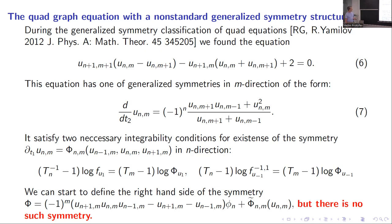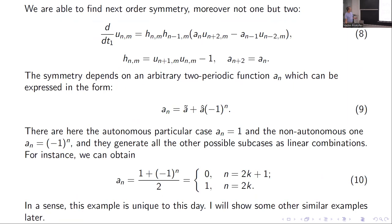So at first we were confused about how this happened — one symmetry exists but the second symmetry is almost present but does not exist. But then we tried to find the symmetry of a related system, and we were successful.